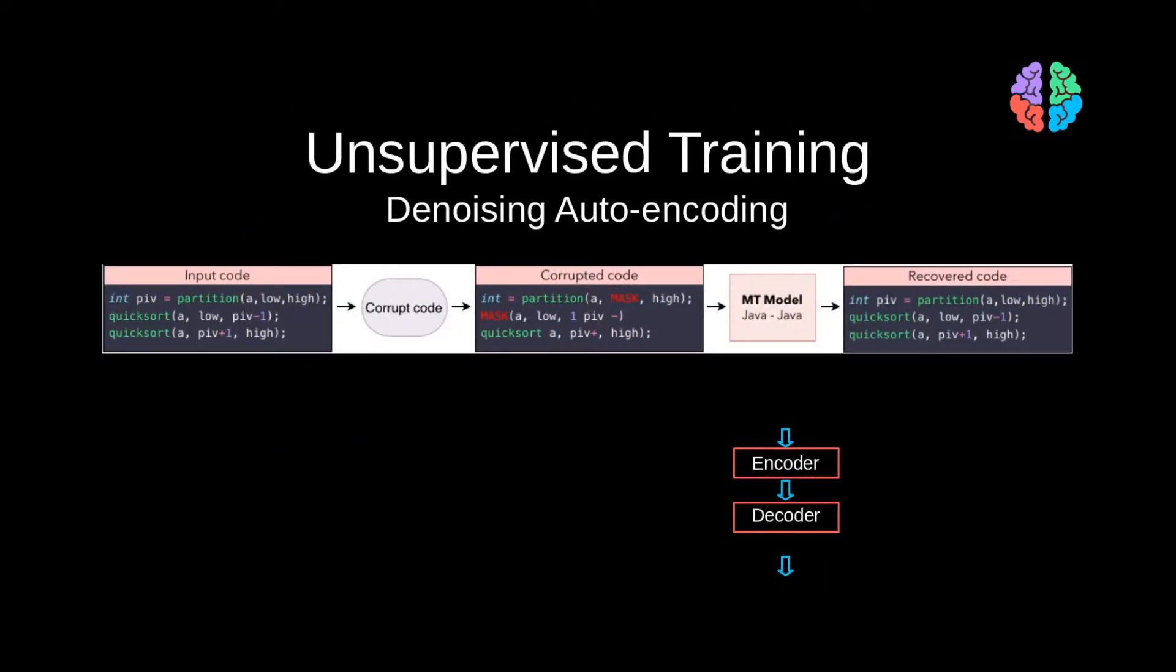The next stage is denoising auto encoding. At this stage, we not only mask the inputs, but to make it more difficult to the model, we also remove and shuffle some tokens. This strengthens the pre-trained encoder-decoder architecture to provide even better representations of the input.